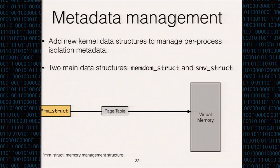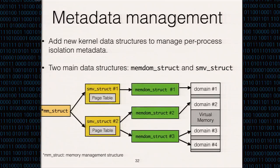In the current Linux kernel, each process has one MM struct to describe its memory space — MM meaning memory management. A process's family of threads use the same MM struct, so they see exactly the same virtual memory with the same privilege. For our metadata management, we added several data structures to record the per-process isolation setup in kernel space. The most important ones are the memdom struct and SMV struct, which record privileged setup and virtual address mapping with privilege information inside the kernel. Each SMV uses one page table.